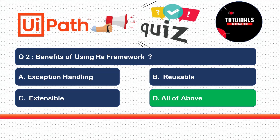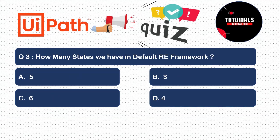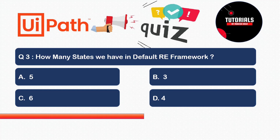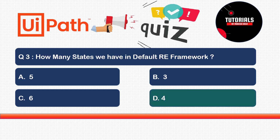Question three: How many states are there in the default RE Framework? You can always add or remove states, but what is the default number? The correct answer is four: Init, Get Transaction, Process Transaction, and End Process. As a developer you always have the option to add or remove states, but by default there are four.